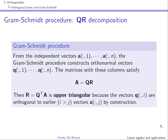If we start from a matrix A with linearly independent columns, the Gram-Schmidt procedure can construct orthonormal vectors Q1 through Qn. This leads to the QR decomposition where Q has columns Q1 through Qn, and R is constructed as Q transpose A, which is upper triangular by construction.